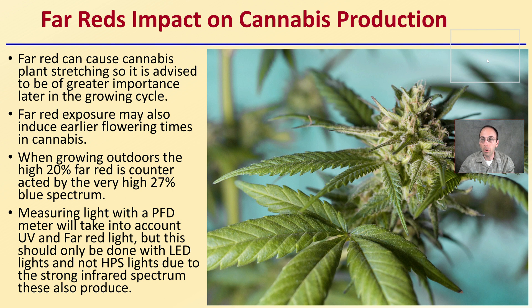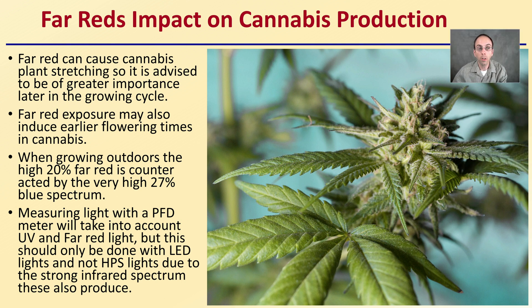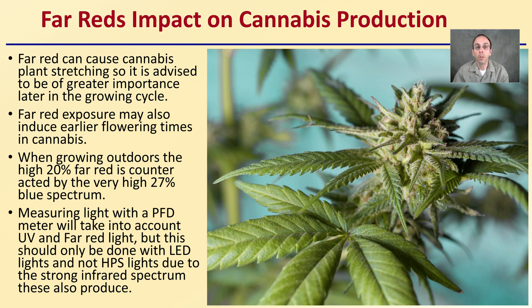Regarding Far Red's impact on cannabis production: Far Red can cause cannabis plant stretching, so it's advised to be of greater importance later in the growing cycle. Far Red exposure may also induce earlier flowering times in cannabis. When growing outdoors, the high 20% Far Red is counteracted by the very high 27% blue light spectrum. Don't assume sunlight's 20% Far Red means you should give plants 20% — sunlight provides many other spectrums. When measuring light, a PFD meter can take into account UV and Far Red, but this should only be done with LED lights and not high-pressure sodium lights, which produce a strong infrared spectrum that may give an artificially high PFD reading.